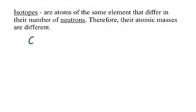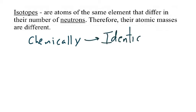Chemically speaking, isotopes would be identical. The reason they're identical is because an isotope does not alter the electrons. If you recall, it is the valence electrons that are responsible for chemical properties. The only thing that changes in an isotope is the number of neutrons. That is why, chemically speaking, isotopes retain their chemical properties.